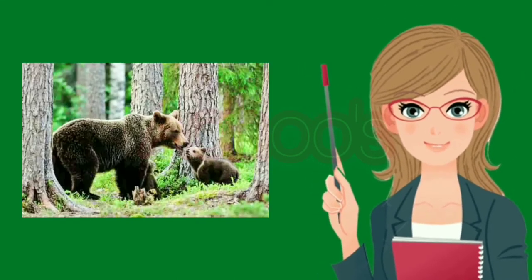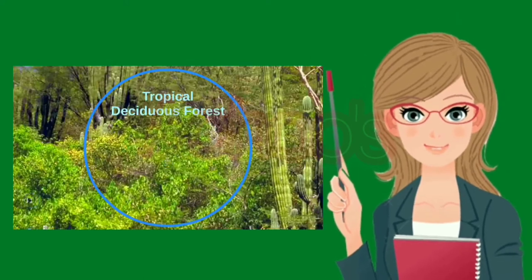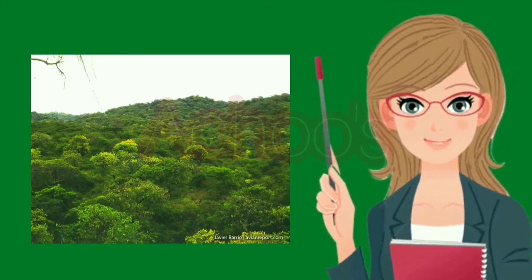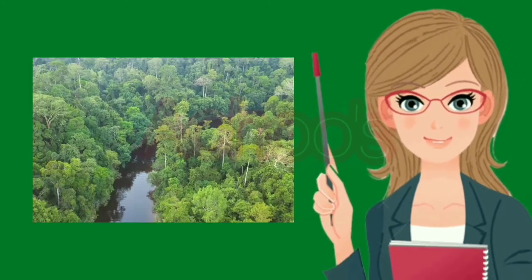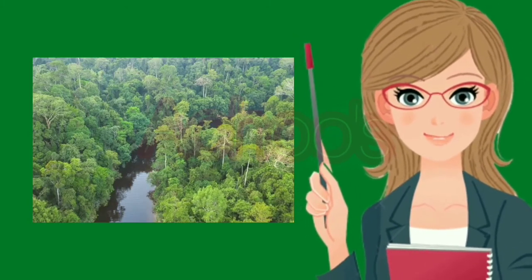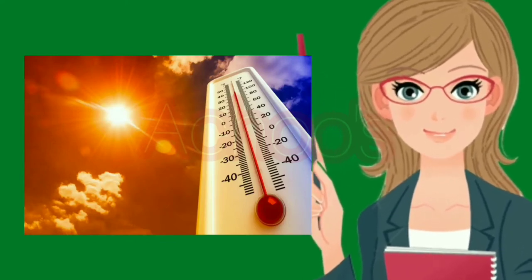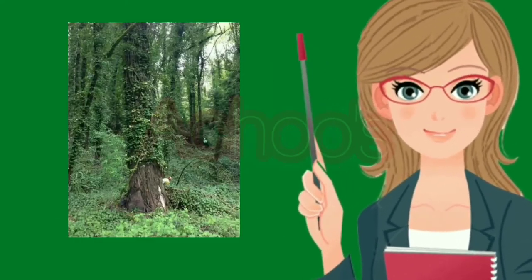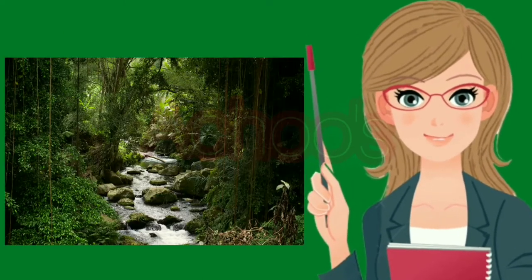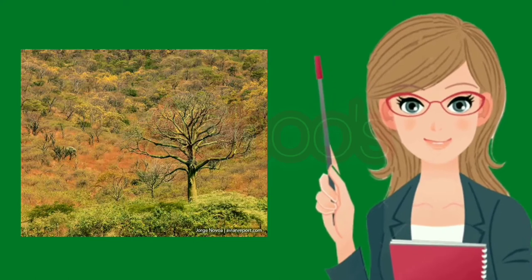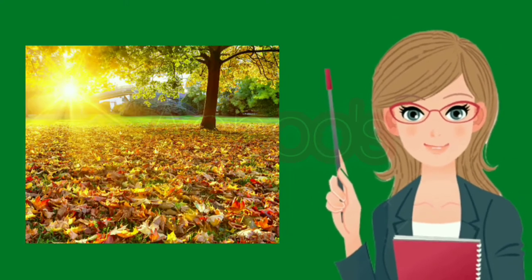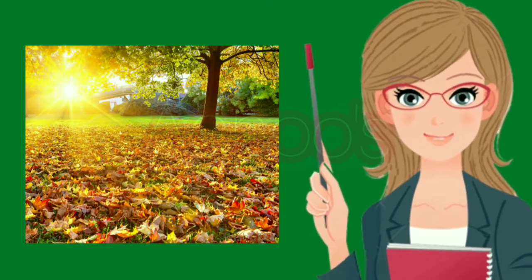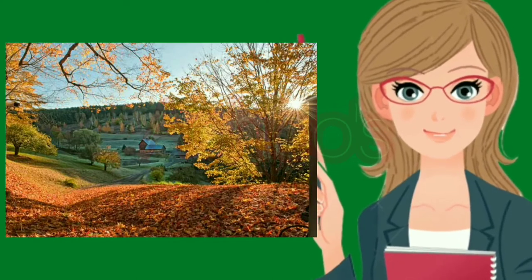The second one is the tropical deciduous forests, also known as tropical monsoon forests. These forests receive seasonal rainfall, which is lesser than the rainfall received by the tropical evergreen forests, but temperatures remain high throughout the year. During the rainy season, they have a canopy of branches, leaves, and vines which shades the forest floor. But in the dry season, when there is an acute shortage of water, they usually shed their leaves to conserve water, which allows sunlight to reach the ground.